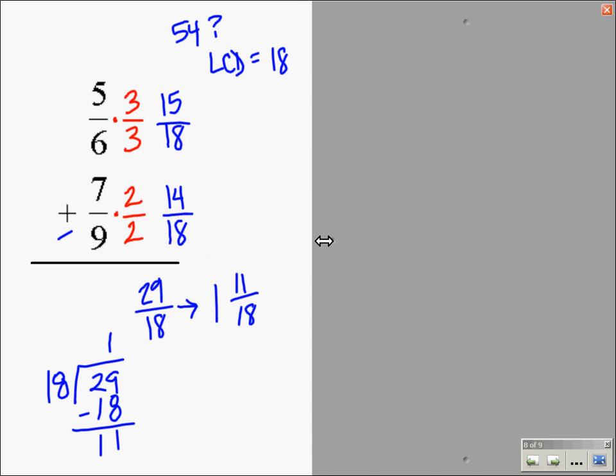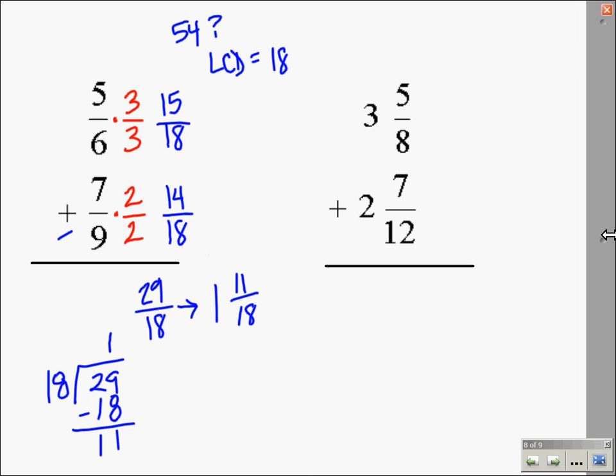Let's see if we can do one more, this time with mixed numbers. Let's take a look at this and what our least common denominator will be. Our least common denominator, when we have the numbers 8 and 12, will be 24. That's the lowest number that both 8 and 12 can go into.